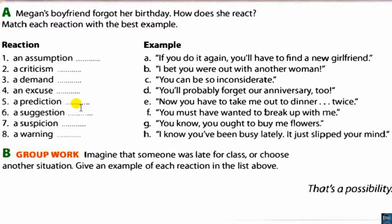Number five — a prediction: D. 'You'll probably forget our anniversary too.' In American English: 'probably' — sometimes the B is silent, sometimes not. 'Probably,' 'probably.' Number six — a suggestion: G. 'You know, you ought to buy me flowers.' A suggestion means to give advice or offer an idea.